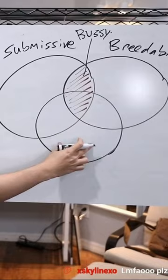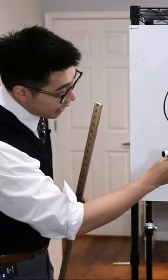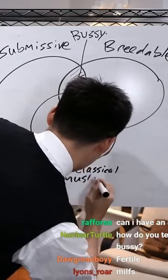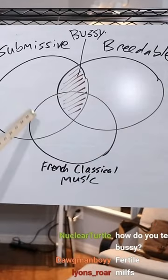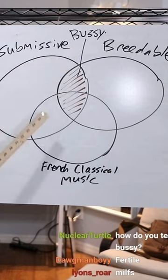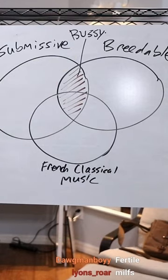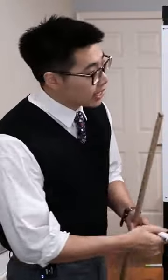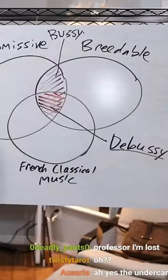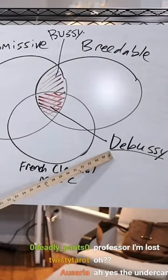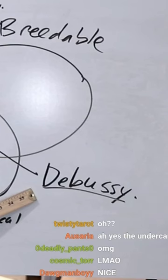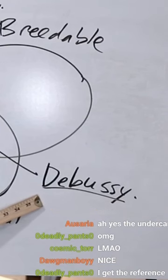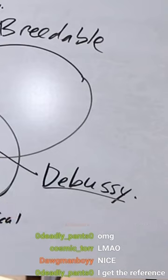What do we have here? If you add French classical music to the submissive and breedable Venn diagram, we get another section right here. And what do we get? Debussy — Claude Debussy, to be exact. The French impressionist composer, Debussy.